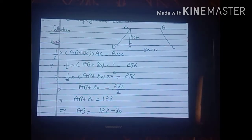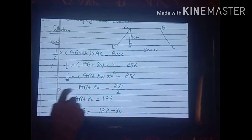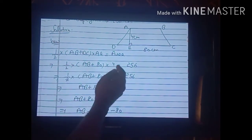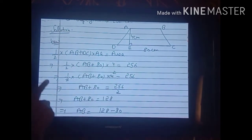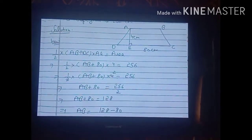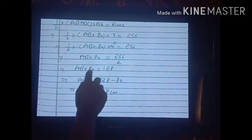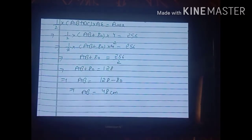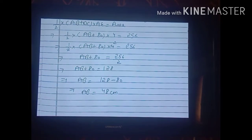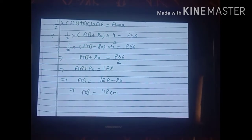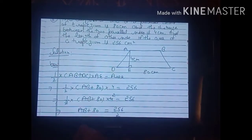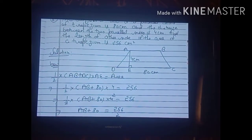Simplifying: (AB + 80) × 2 = 256, so AB + 80 = 256/2 = 128. Taking 80 to the other side: AB = 128 − 80 = 48 cm. So the other parallel side is 48 cm.